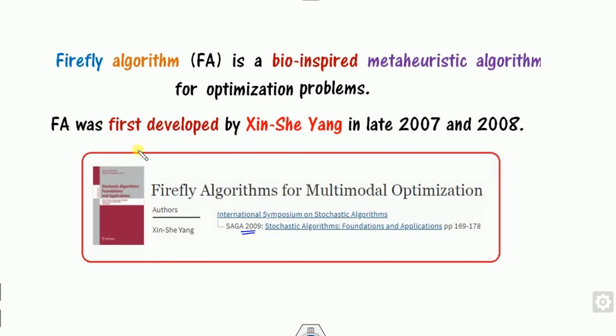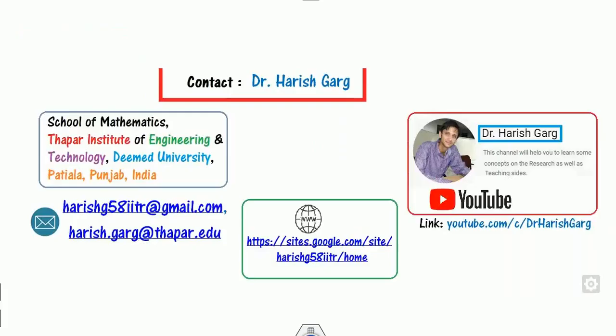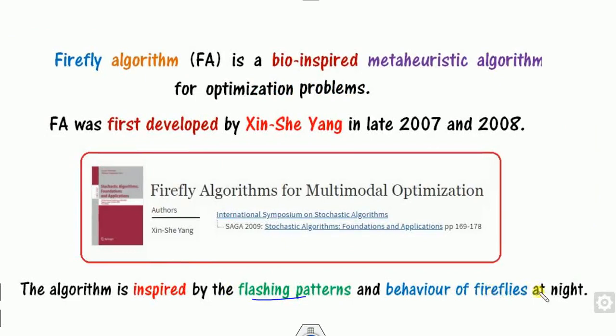All of you know what a firefly is — you have seen it in your day-to-day life. The firefly emits light, and based on this light, fireflies move from one place to another and interact with each other. The Firefly Algorithm is basically inspired by the flashing behavior of fireflies at night.